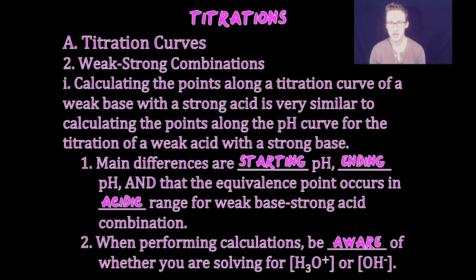The big difference is where the pH starts, where it finishes, and where the equivalence point occurs. In a weak acid-strong base setup, the equivalence point occurs in the basic range. For a weak base-strong acid combination, the equivalence point is in the acidic range. Be aware whether you're dealing with hydronium or hydroxide ion concentration and remember the relationships between them.